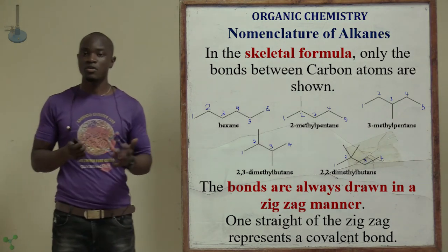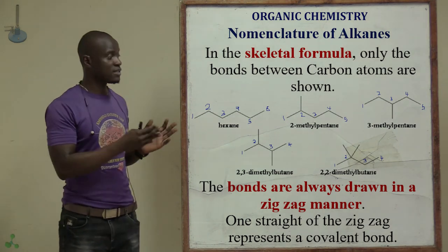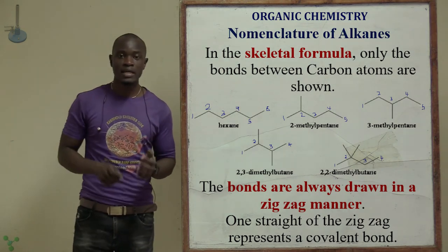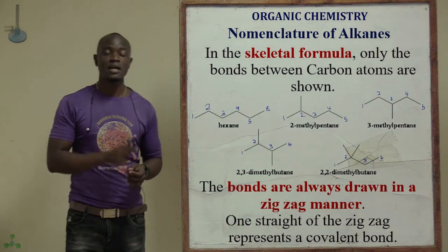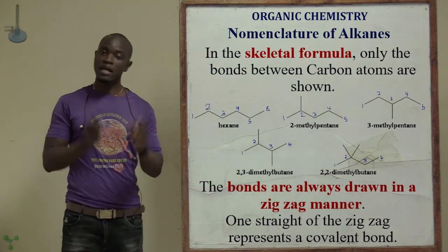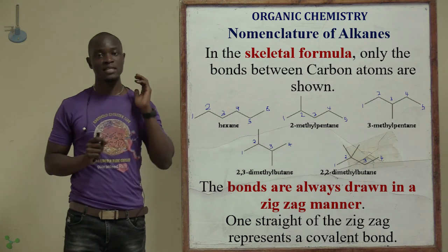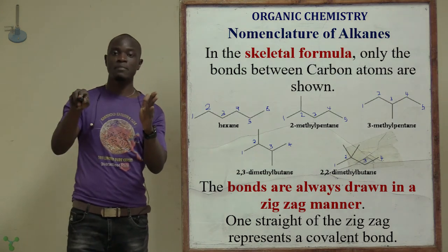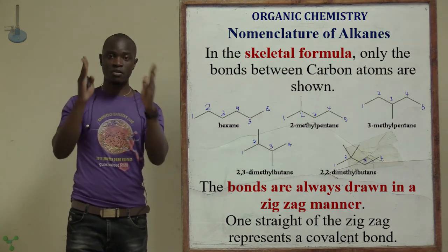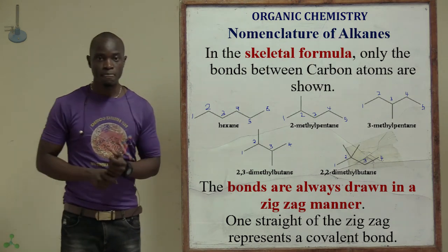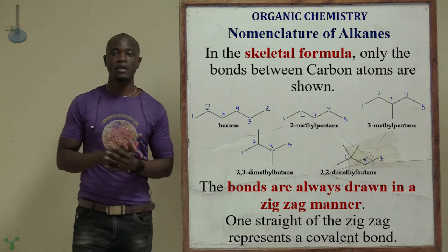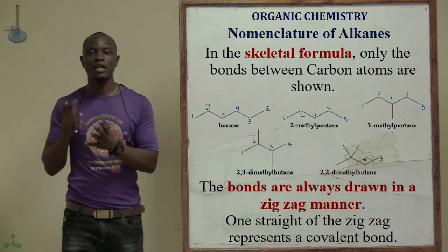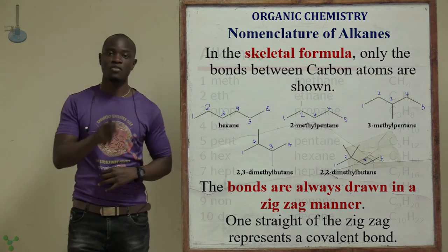The bonds in skeletal structures are always drawn in a zigzag manner. One straight line of the zigzag represents a covalent bond, with one carbon on each side. A molecular formula shows the elements present in the chemical formula of the structure.